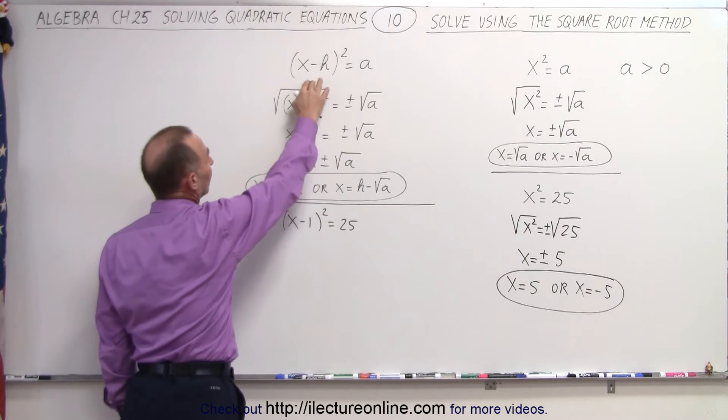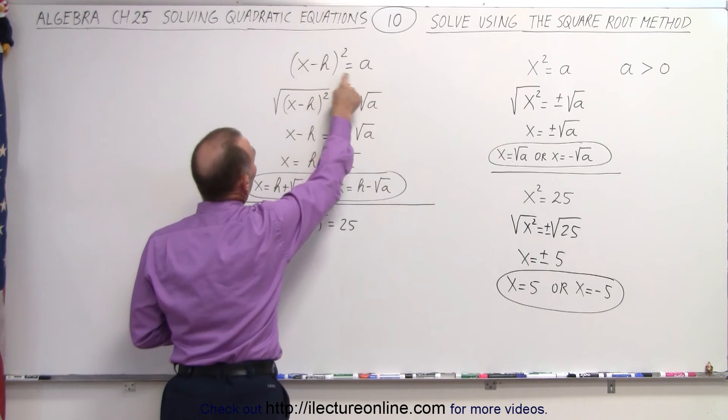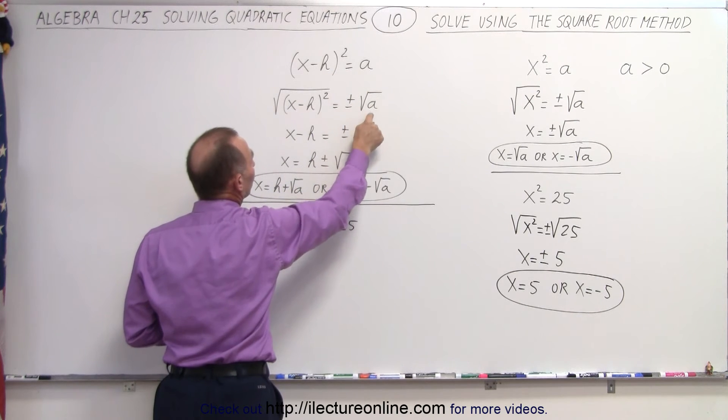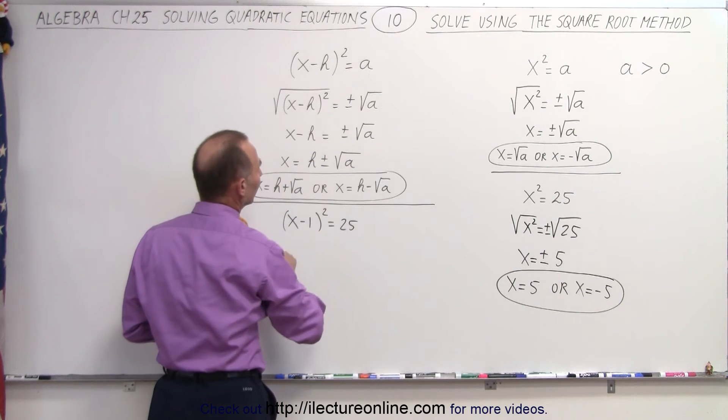If we have something that looks like this, you can again use what we call the square root method. We take the square root of both sides. We take the plus or minus and the square root of the right side. Notice that we end up with x - h on the left, move h to the right side.